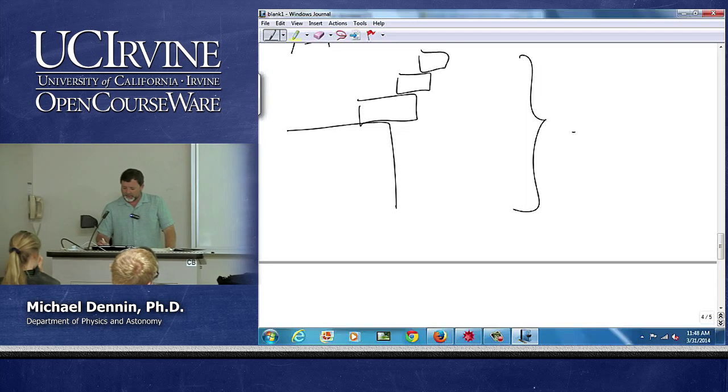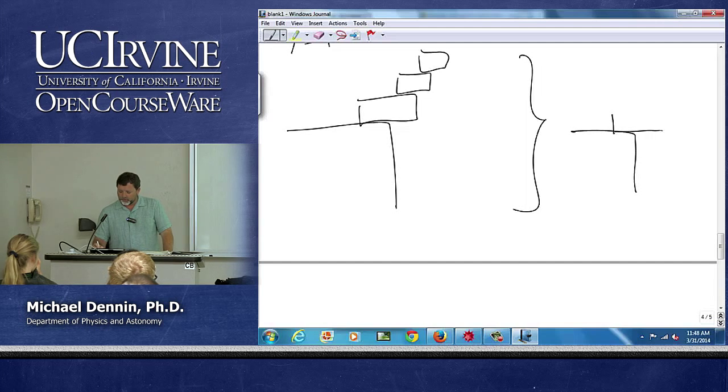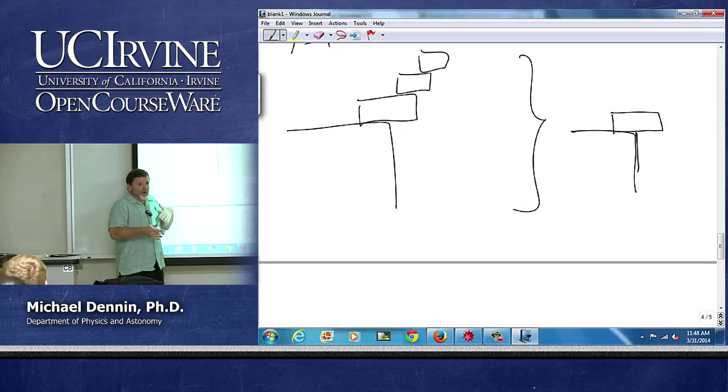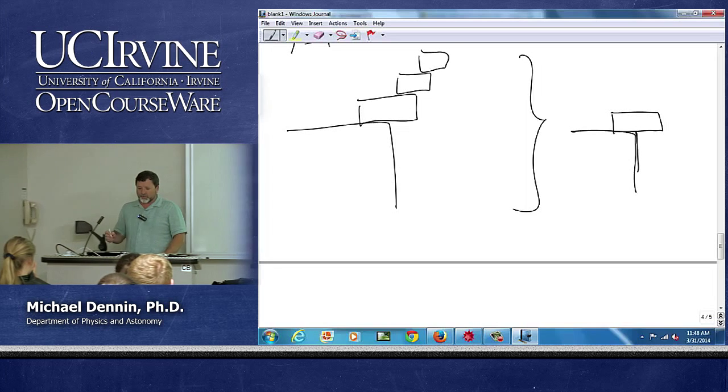Now the first block, the farthest out you can put it is where? Halfway or it falls. And the reason it falls is the torques don't balance.